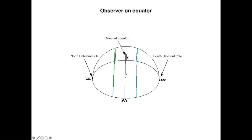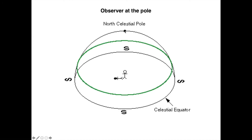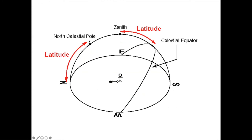If you are on the equator, the earth is rotating on an axis that coincides with the horizon. The celestial equator passes right through the zenith, and the diurnal motion traces small circles parallel to the equator — stars rise at right angles to the horizon. The north celestial pole is on the horizon, so the elevation of the pole is zero at the equator (latitude zero), and 90 degrees at the pole (latitude 90 degrees). So the elevation of the pole gives you the latitude, and the angle from the zenith to the celestial equator is also the latitude of the observer.